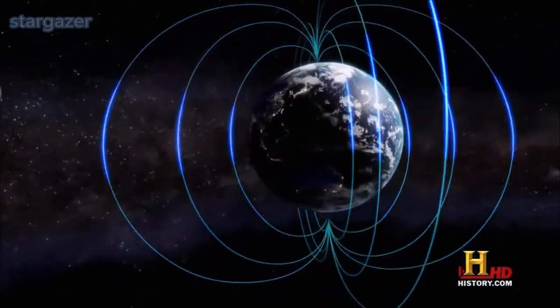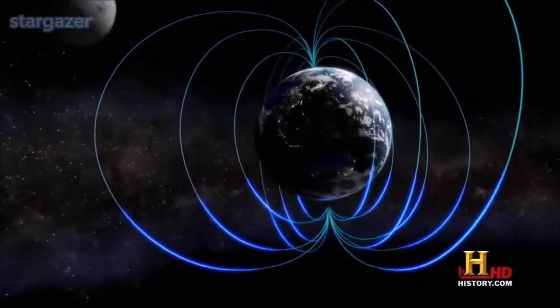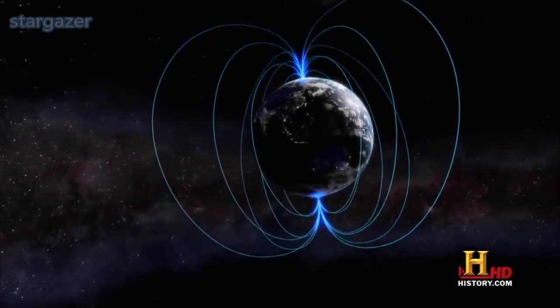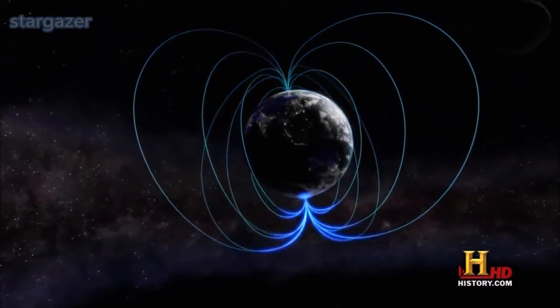Exactly what causes the poles to reverse is not completely understood. All we know is that it happens. We know that the orientation of the Earth's magnetic poles switches every few hundred thousand years.